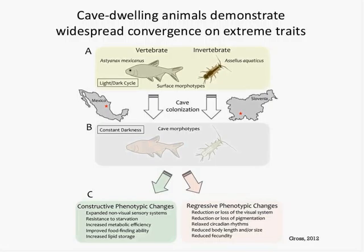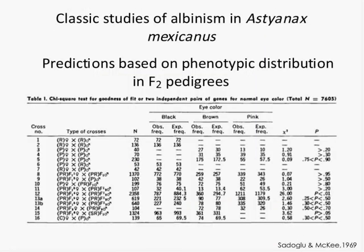The fish that colonized the Pachone region did so roughly 2 to 3 million years prior to the surface-stream-dwelling fish that colonized the other cave. Yet there's a remarkable amount of convergence on the cave phenotype — and this is not something present just in cave fish. Whether you're a freshwater fish from Mexico or a crustacean from southern Slovenia, colonization into the cave environment — losing a normal light-dark cycle and experiencing a nutrient-poor environment — leads to the evolution of both constructive and regressive phenotypic changes.